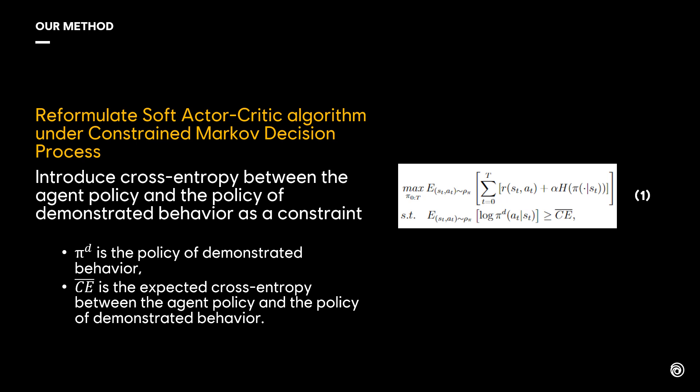Where πd is the policy of demonstrated behavior, which is trained with samples of demonstrated behavior and an imitation learning algorithm. Ce bar is the expected cross entropy between the agent policy and the policy of demonstrated behavior, which controls their similarity. The smaller Ce bar, the more the agent policy is required to be similar to the policy of demonstrated behavior.